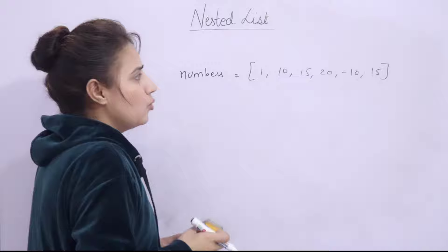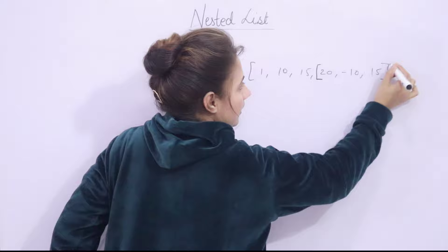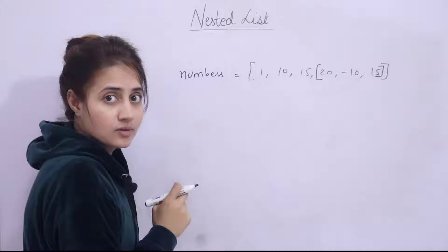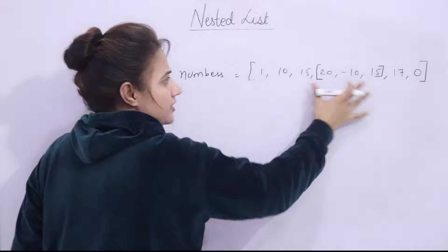Now, what is a nested list? A nested list is a list within a list. Suppose rather than plain elements, I write something like [1, 10, [20, -10, 15], 17, 0] — here within the outer list I have one more list containing 20, -10, and 15. That is what a nested list is. We can add more elements as well.